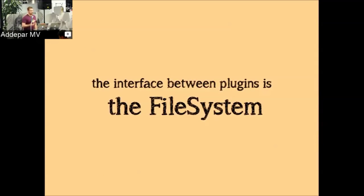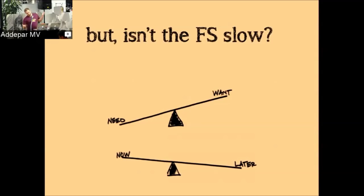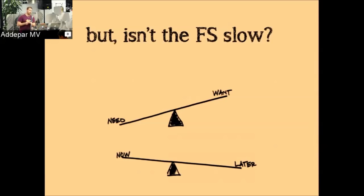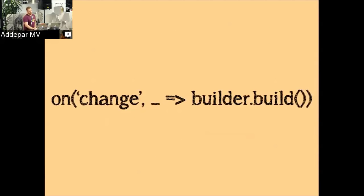Is the file system slow? Slow is always relative. If you use the tool correctly, it's going to be fast; if you use it incorrectly, it's going to be slow. Just like there are ways to use the DOM efficiently, there are ways to use the file system efficiently. For example, if we loaded everything into memory, we'd be relying on V8's garbage collector to deal with potentially hundreds of megabytes or gigabytes of files — that's not what it was designed for. The file system is really good with lots of large files. Broccoli's goal is to utilize the file system correctly.